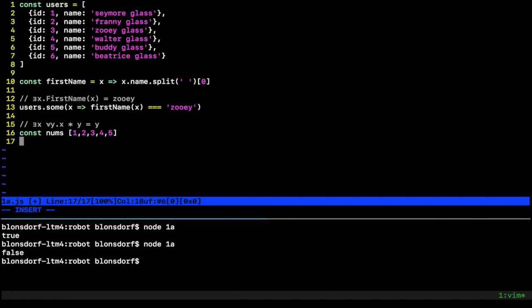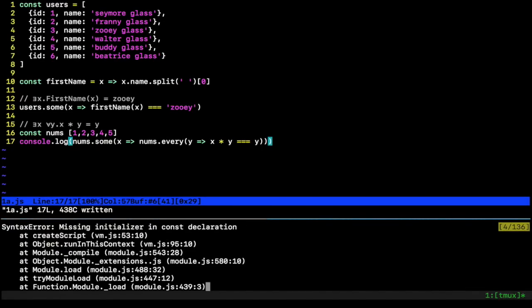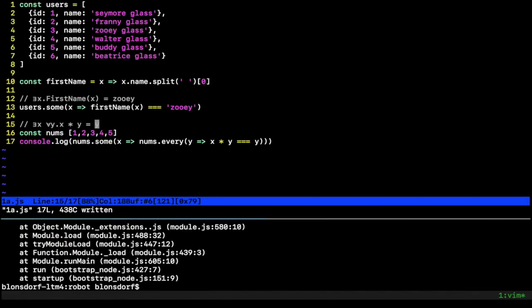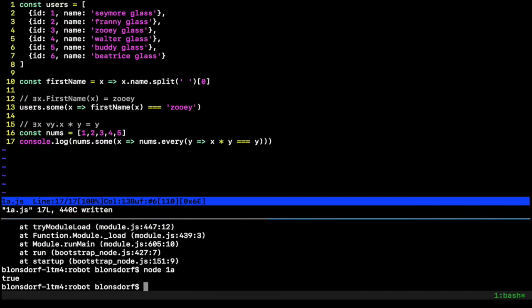So we're going to say let's see, nums, some, there's some X out there where nums every, every other number, where X times Y is equal to equal to Y there. Okay. And hopefully this statement is true or else all our math doesn't really work out from grade school. And oh, it's not true. It's missing initial. I forgot an equal sign. There we go. Real assignment. Okay. And there it is true.